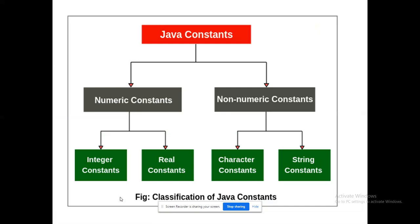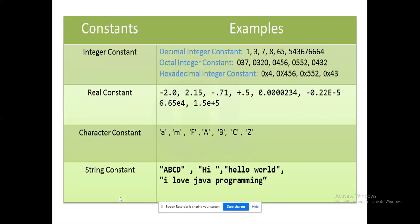After variables: a variable changes during program execution, but a constant does not change throughout program execution. There are two types of constants in Java: numeric constants and non-numeric constants. In numeric constants we have two classifications: integer constants and real constants. For non-numeric constants, we have character constants and string constants. So while data type is being dealt with, you will understand these more, but here are some examples.